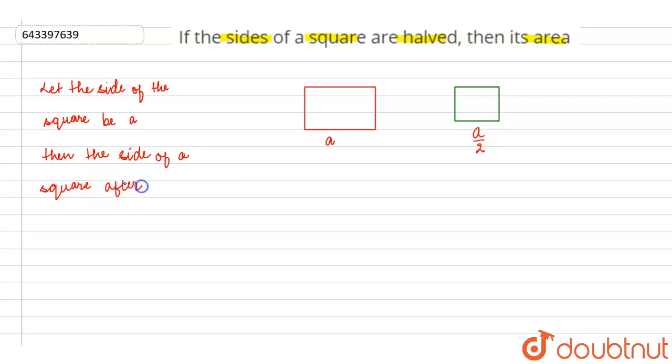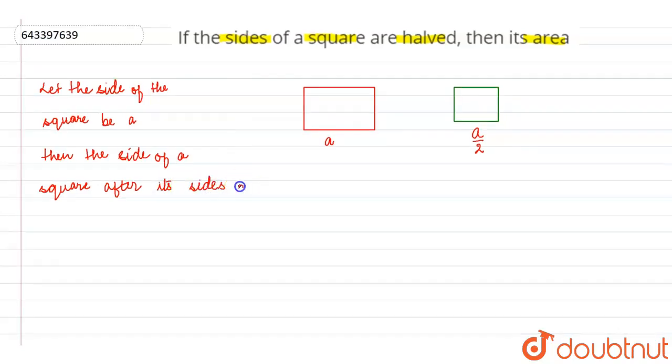So after its sides are halved, then new area of the square is a upon 2 whole square, that is a square upon 4.